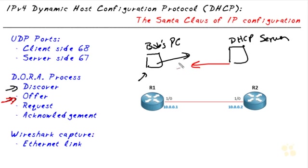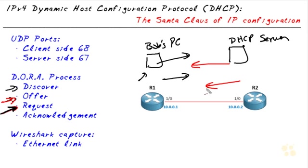After Bob's PC gets that offer, if it wants to take it, it'll go ahead and request it — a message going back to the DHCP server saying it's going to take the IP address offered. That's our third packet in a typical DHCP exchange. To finalize it, the server sends an acknowledgement, confirming that the IP address it offered is now being leased to Bob's PC.